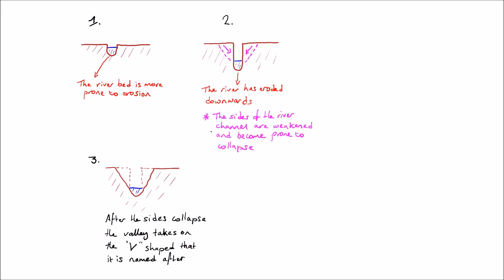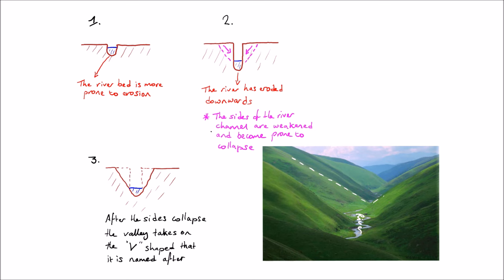Now I'm going to be adding over here a photograph so you can see what a V-shaped valley looks like and I'm going to be labeling it in. You can see the river and you can see the V-shape of the valley.